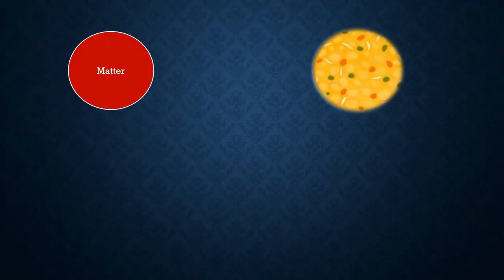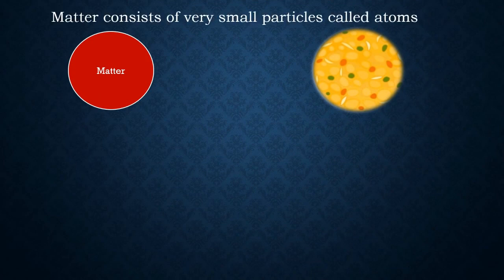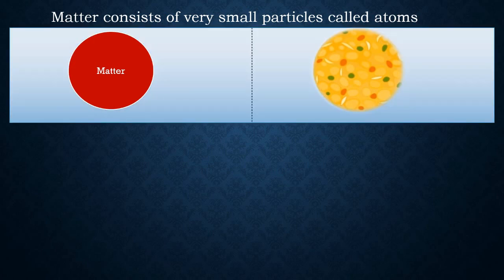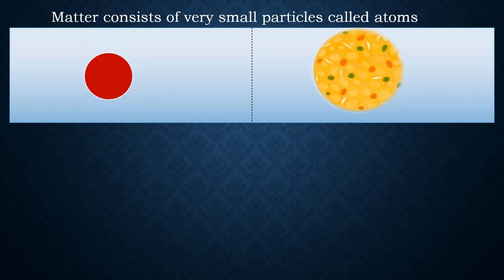The first postulate of Dalton's atomic theory states that matter consists of very small particles called atoms. This means that when we go on dividing matter into smaller and smaller sections, what we get at the end is an atom.